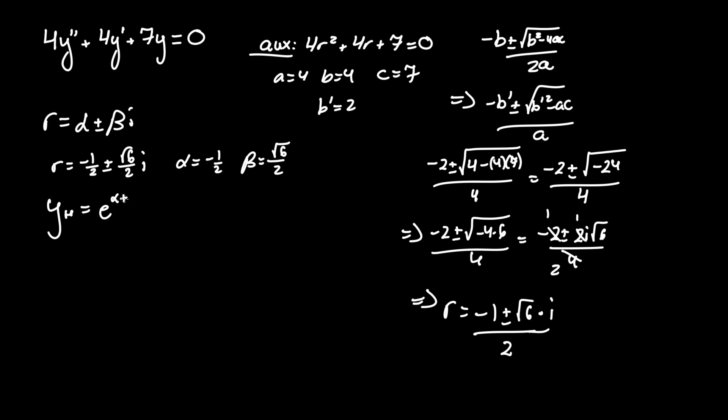So e to the alpha t times c1 to create a degree of freedom such that there are infinite solutions, times cosine, which you usually tend to include when you see i, of beta t plus c2 sine of beta t.